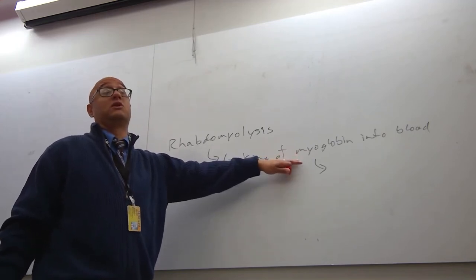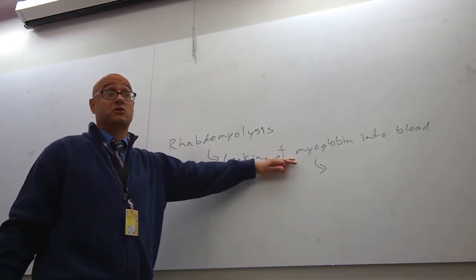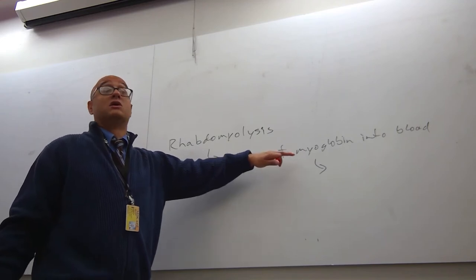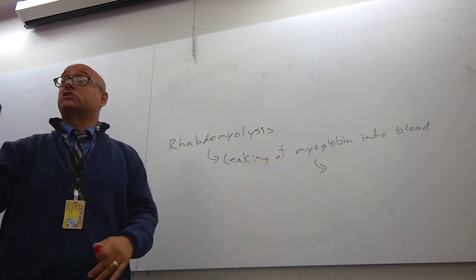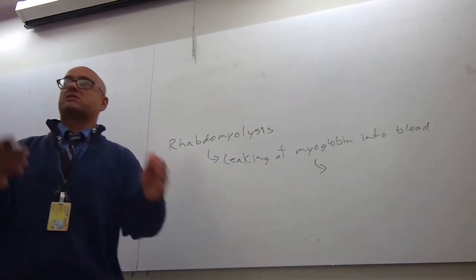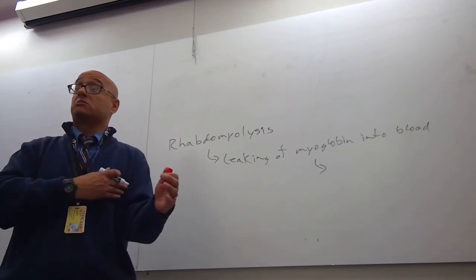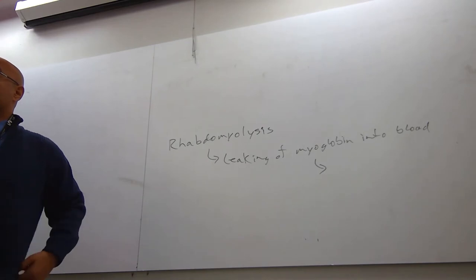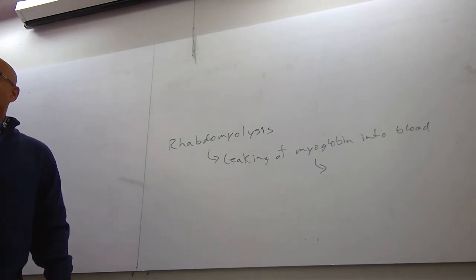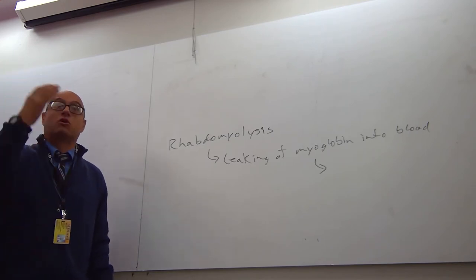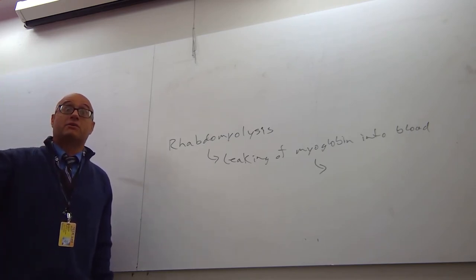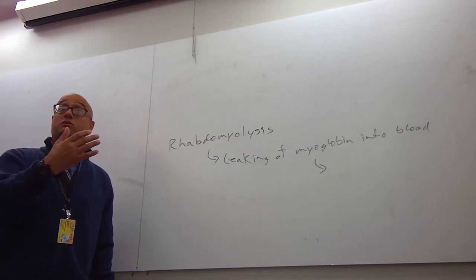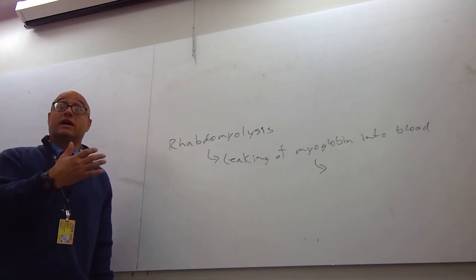This myoglobin in the bloodstream does not belong there. It's supposed to be in skeletal muscle. So if this ever shows up on somebody's blood, they had a crushing injury. They got crushed by a car. They got run over by something. They cut and damaged the muscle. Or they're like one of these OCD type people that go to the gym and they never leave the gym. That can lead to your death.